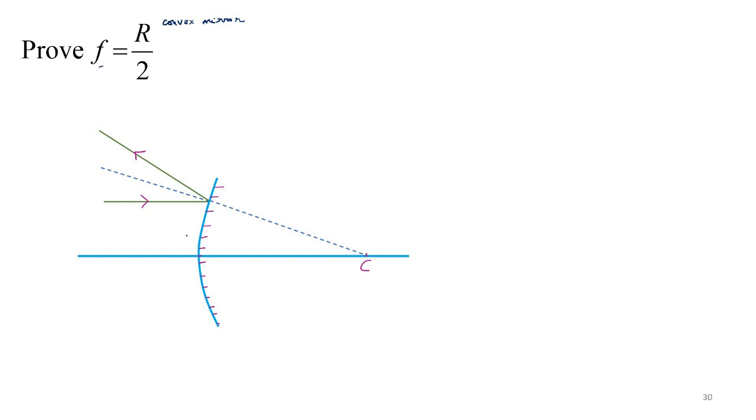This is incident ray. This is incident on the convex mirror. So incident ray, reflected ray. And you indicate the angle of reflection, angle of incidence.